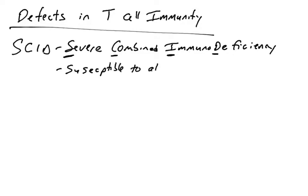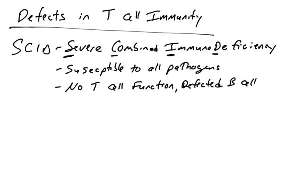This deficiency is severe because individuals are susceptible to all types of pathogens — viral pathogens, bacterial pathogens, intracellular, extracellular. It is combined because it affects both humoral immunity (B cells) and cell-mediated immunity (T cells). Individuals who suffer from SCID typically have no T cell function and defective B cell function.